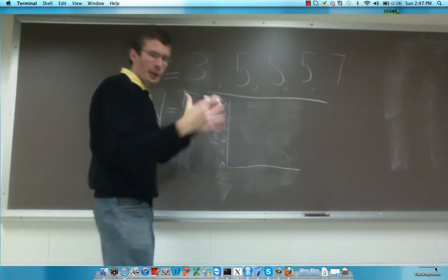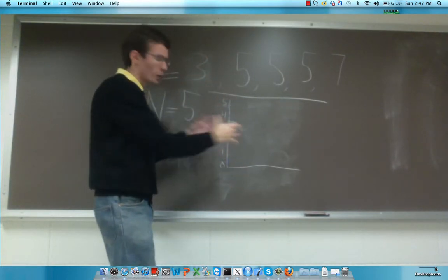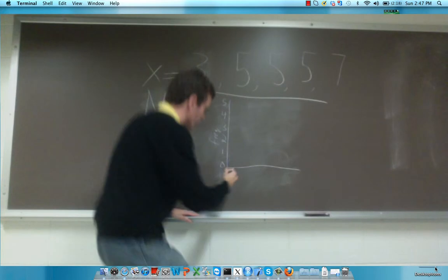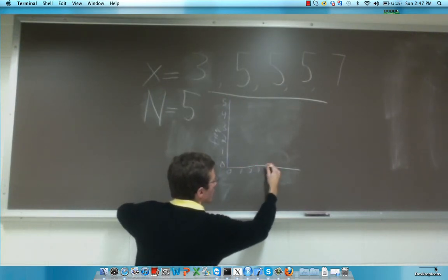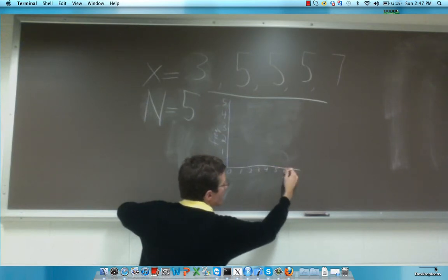But I'm going to go a little bit outside those bounds just to make the graph more centered. So I'm going to start from 0, 1, 2, 3, 4, 5, 6, 7, and 8.